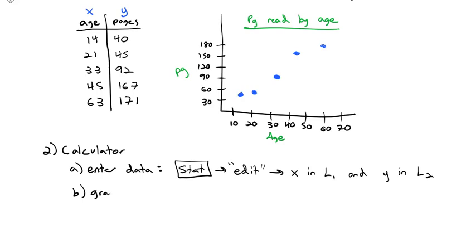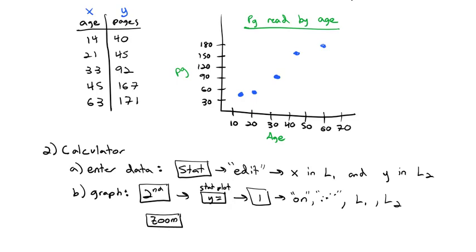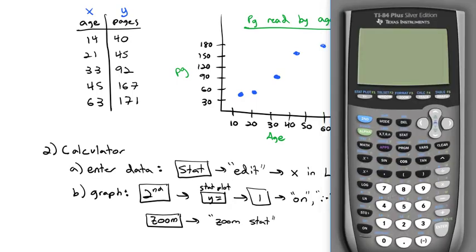Once you've entered the data, you're ready to make the graph. And the way we make the graph is first you'll have to hit the second button. And then you'll have to hit the y equals button. Because above y equals, the second feature is statplot. It's for graphing statistics. And you're going to go into the first statplot and make sure it is on. Make sure you select the scatterplot, which is going to be the dots. And then you want to select what list you want, L1 and L2. Once you're done with setting up the statplot, you'll hit the zoom button. And you'll select zoom stat, which will center you right on the statistics.